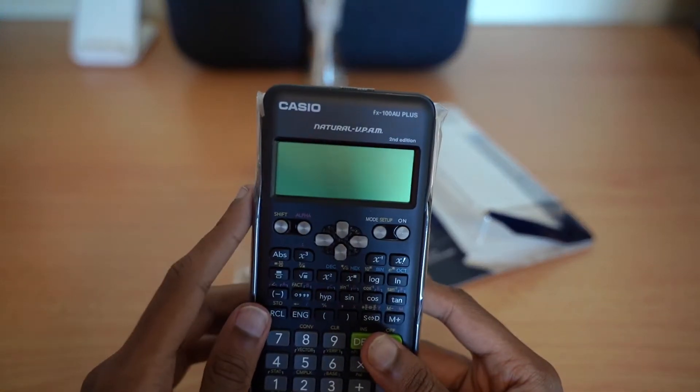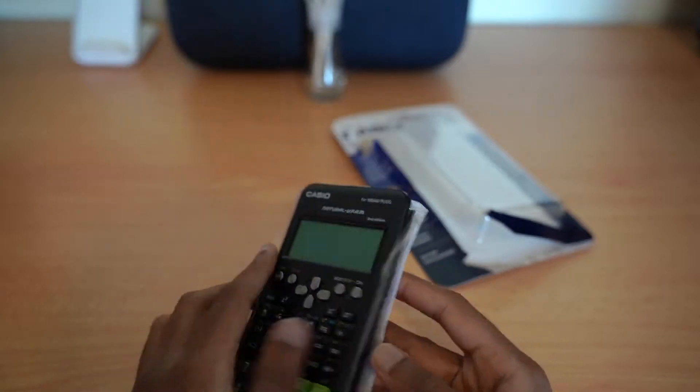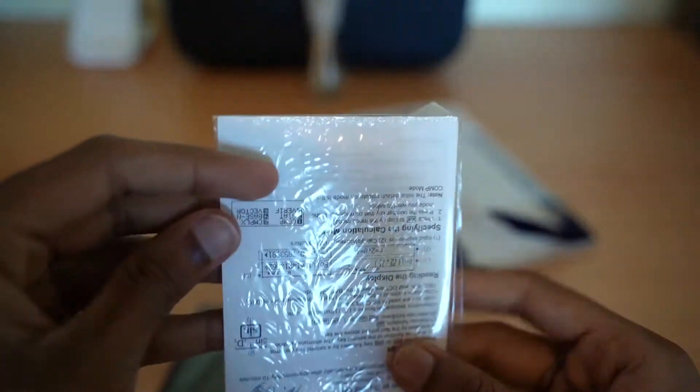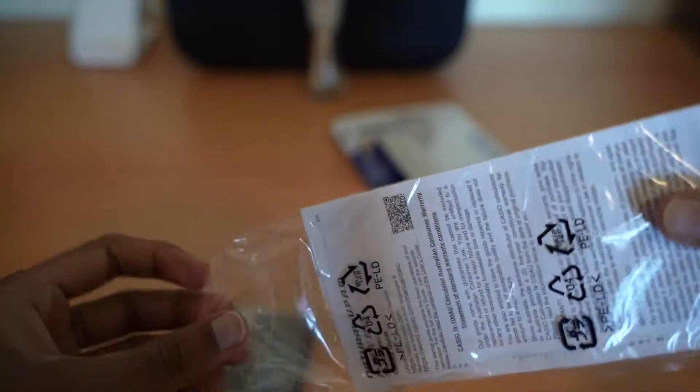This is the calculator. As you can see. There is the Casio rubber bar. Oh so this is the holder. The warranty and stuff. You'll see what is inside.